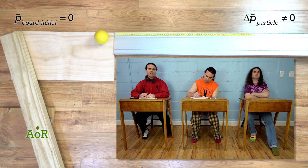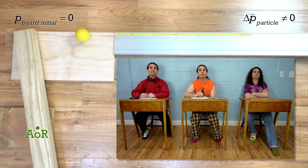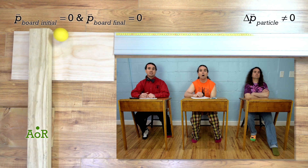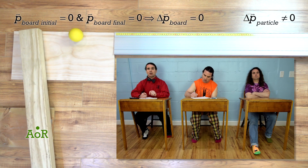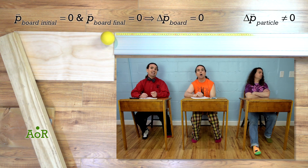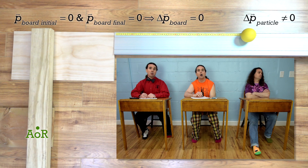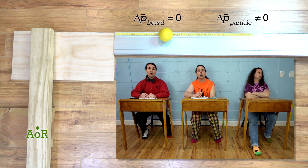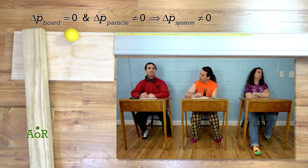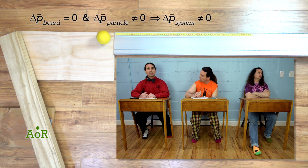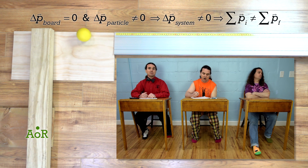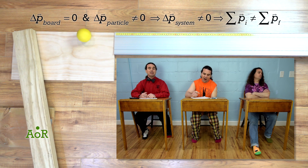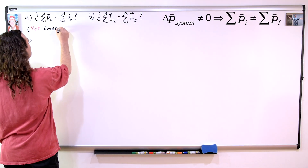After the collision, the wooden board is rotating. However, its center of mass is still not moving, so it still has zero linear momentum. Therefore, the wooden board has zero change in its linear momentum. If we sum the changes in linear momenta of the wooden board and the point particle, there must have been a change in linear momentum of the system because the linear momentum of the point particle changed and the linear momentum of the wooden board did not. Therefore, linear momentum of the point particle and wooden board system is not conserved.